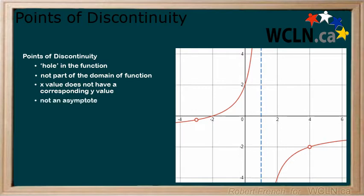Points of discontinuity are different than asymptotes, though. Here, we have a vertical asymptote at x equals 1. This is not a point of discontinuity, even though at x equals 1 there is no corresponding y value. The points of discontinuity can be seen at x equals negative 3 and x equals 4. For each of these x values, we see that there is not a corresponding y value, which is shown by drawing a circle in the function, or a hole.